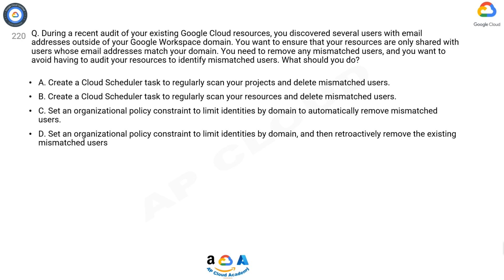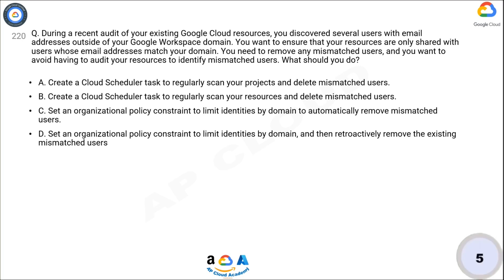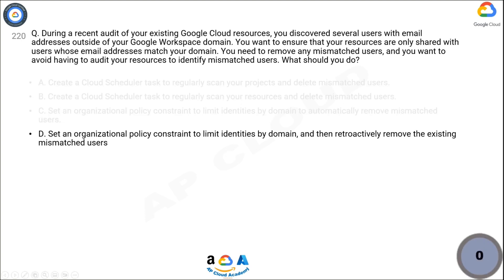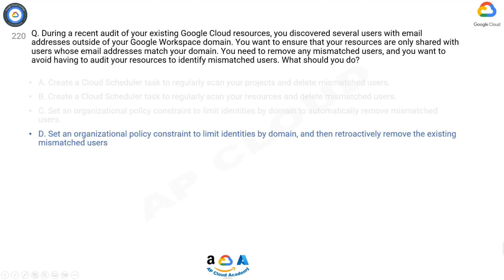C: Set an organizational policy constraint to limit identities by domain to automatically remove mismatched users. D: Set an organizational policy constraint to limit identities by domain, and then retroactively remove the existing mismatched users. The correct answer is D.